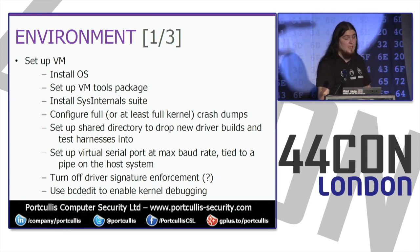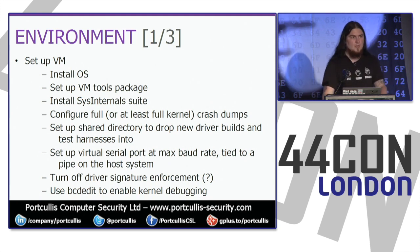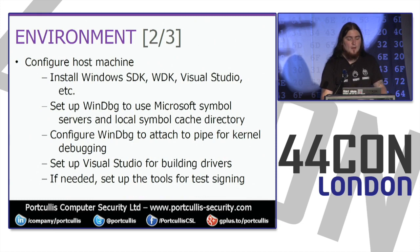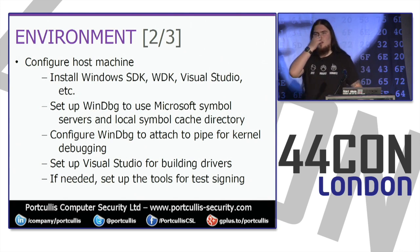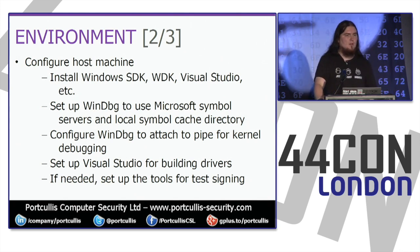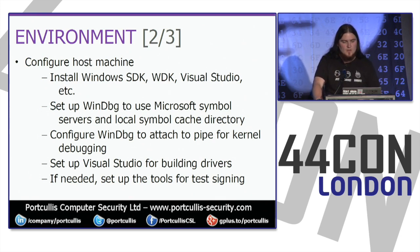Turn off driver signature enforcement — sometimes you don't have to, since enabling kernel debugging can disable that automatically. Then use bcdedit to enable kernel debugging. Configure your host machine with the SDK, WDK, Visual Studio, and set up WinDbg to use the Microsoft Symbol servers. Normally WinDbg only sees raw assembly of the kernel, but with the Symbol server it downloads function names and more, storing them in a local cache.